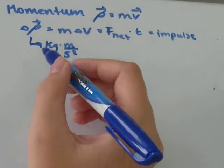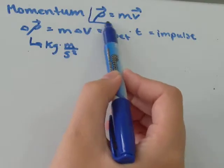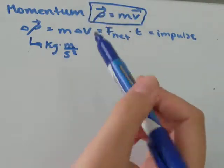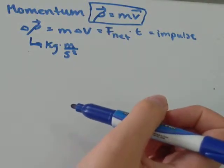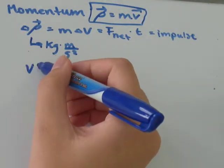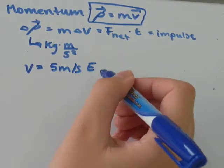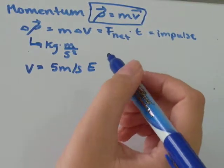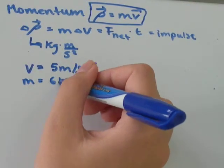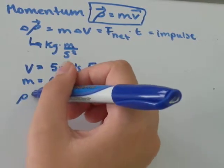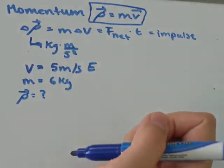So I'm going to do an example. We're going to start with this formula here. We've got a ball that's traveling at a velocity of 5 meters per second in the east direction, and it weighs 6 kilograms, and we're asked what is the momentum of the ball.